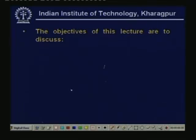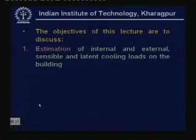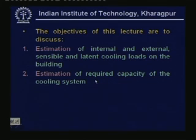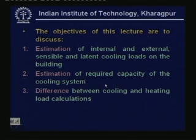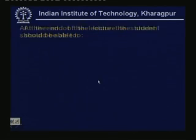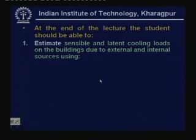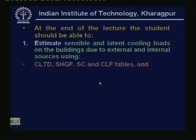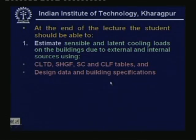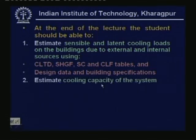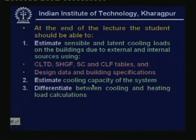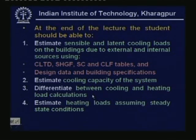The specific objectives of this lecture are to discuss estimation of internal and external sensible and latent cooling loads on the building, estimation of required capacity of the cooling system, and the difference between cooling and heating load calculations. At the end of the lecture you should be able to estimate sensible and latent cooling loads using CLTD, SHGF, SC, and CLF tables and design data, estimate cooling capacity of the system, and finally estimate heating loads assuming steady state conditions.